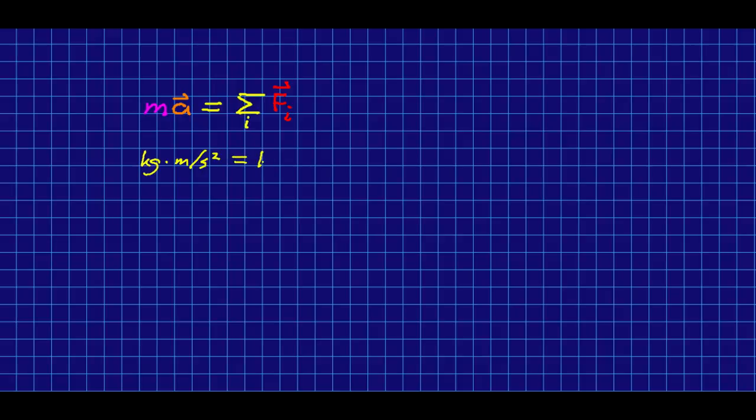We define one newton, that is the name of this force, as one kilogram meter per second squared. So you can think of it as the force that will cause a one kilogram object to accelerate at one meter per second squared.